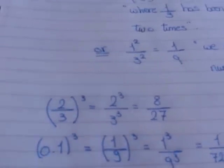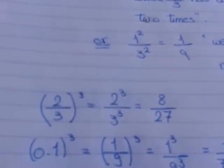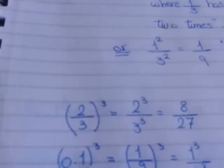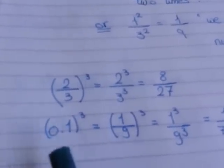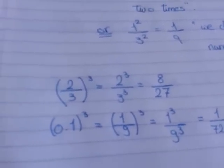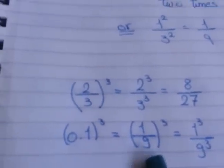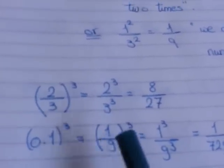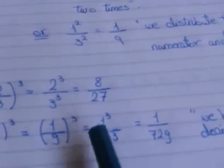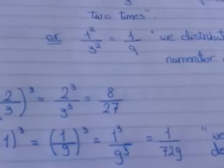Let's see another example. 0.1, all to the power 3. I have to change the decimal number 0.1 to a rational number — we took this in the first term. Put 0.1 on the calculator; it will give me 1 over 10. Then we distribute 3 on 1 and 10: 1 power 3 over 10 power 3. 1 power 3 equals 1, and 10 power 3 equals 1,000.